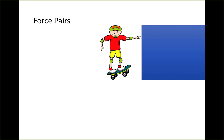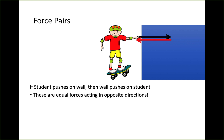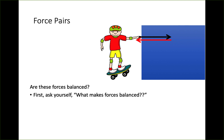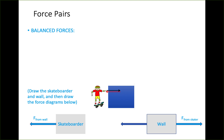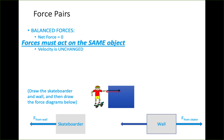Looking at this force pair example: a student on a skateboard pushes on the wall, and the wall pushes back on the student — equal forces in opposite directions. Here's a tricky question: are these forces balanced? We know balanced forces result in a net force of zero and do not change velocity. They are equal in magnitude acting against each other — so does that make them balanced? The answer is no, and here's exactly why.